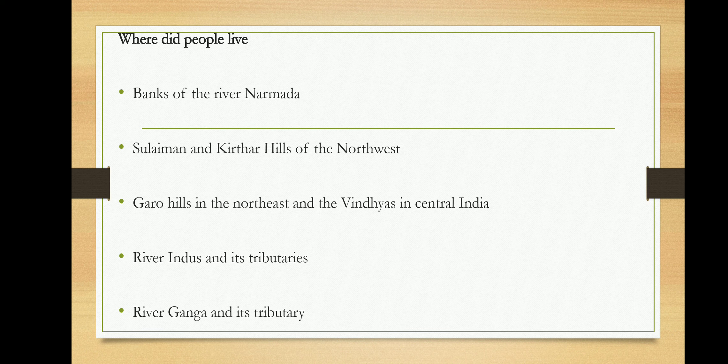Let us understand what a tributary is. A tributary refers to the branches of different rivers that join together to form a single river. For example, the Kaveri starts from Karnataka, comes into Tamil Nadu, and joins the Bay of Bengal. It receives water from different parts of mountains and various places — all of these joining streams are called tributaries.